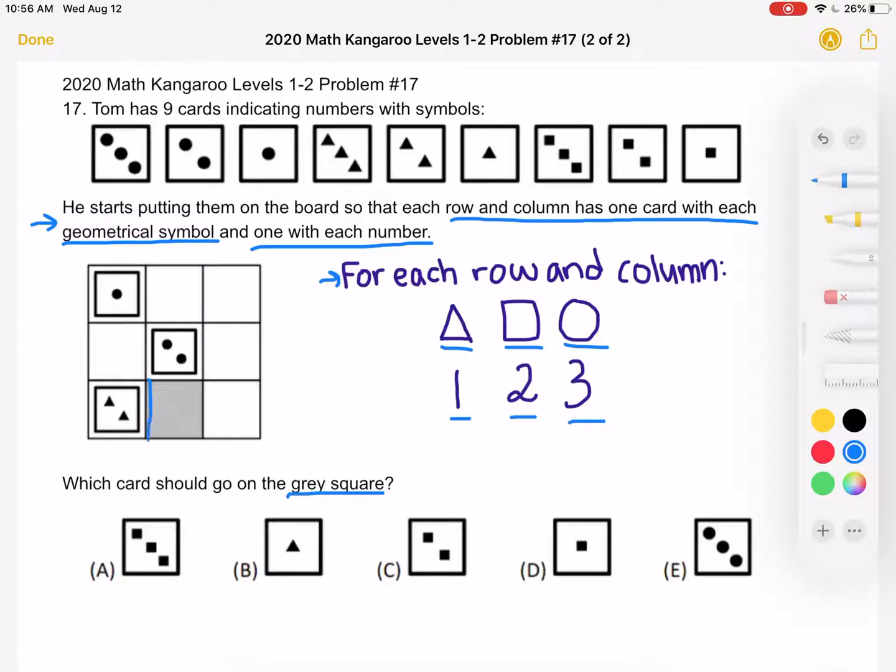And we know that we're trying to find which card should go on the gray square, which is over here. In order to do that, we should take a closer look at this row. We can see that we already have this card with two triangles placed on it.